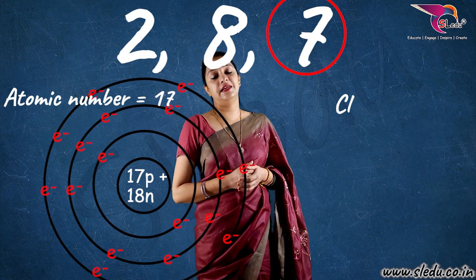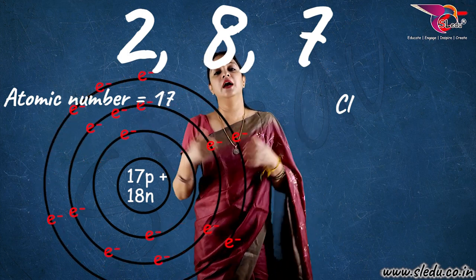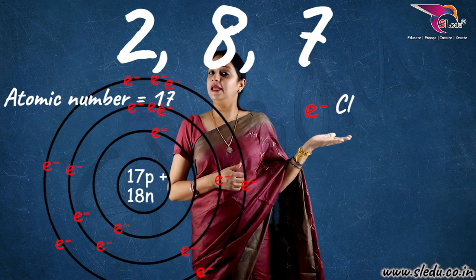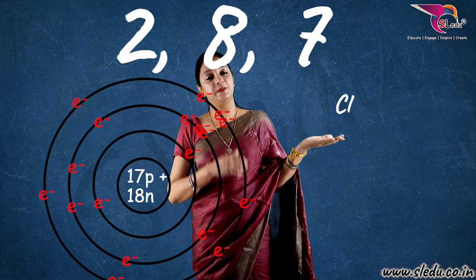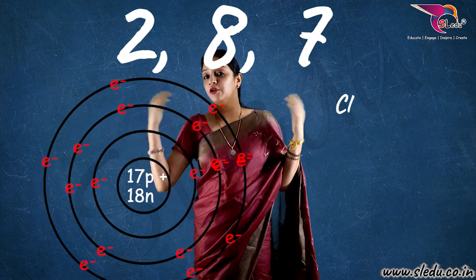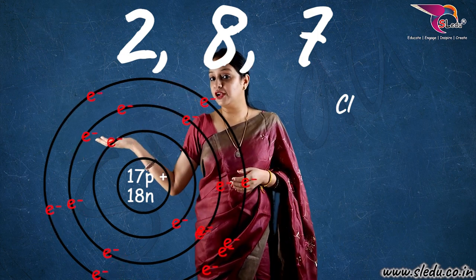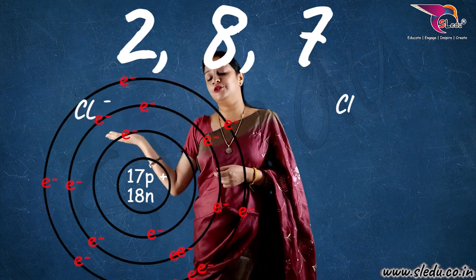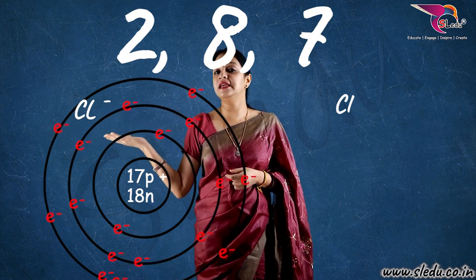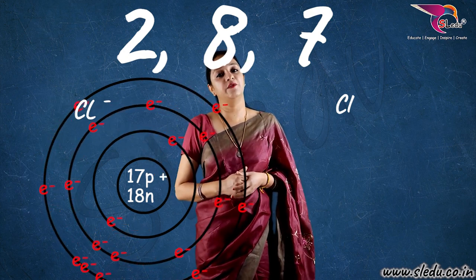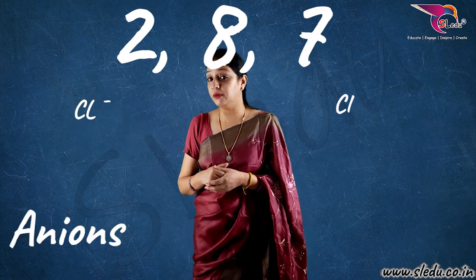Now, to complete the 7 to 8, either it removes 7 electrons or it gains one electron. So, chlorine gains one electron. Now, if it gained one electron, its number of electrons has increased and protons are fewer. So, what charge will it get? Negative — correct. So, as you can see on my left side, chlorine becomes Cl negative. Cl negative means it becomes an anion. So, mostly the anions are non-metals.